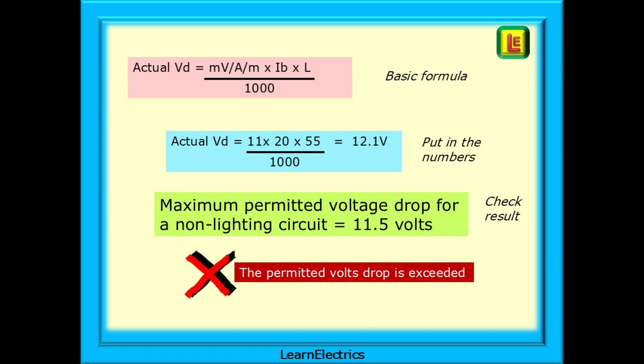So, start with the basic formula and put in the numbers that we have. 11 from the pink table, 20 amps from our earlier calculation, and 55 metres as suggested by the on-site guide. Dividing this by 1000, we have a voltage drop of 12.1 volts. When we check the result, we find that the voltage drop limit will be exceeded for this circuit if we use the full 55 metres. Too much voltage is lost in the cables. The maximum permitted voltage drop for a non-lighting circuit is 11.5 volts.